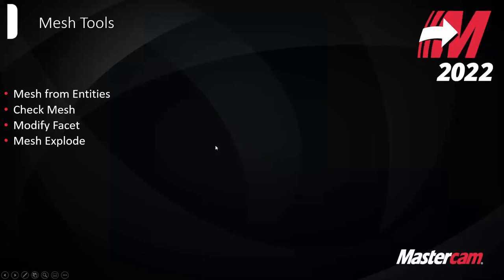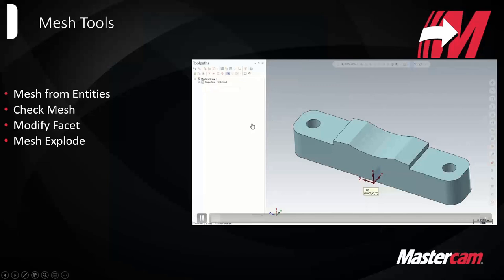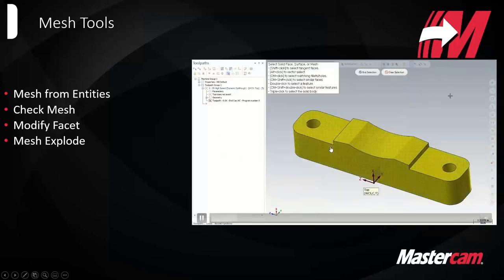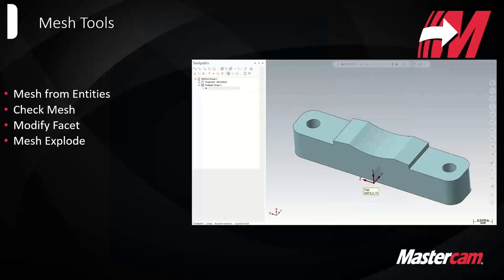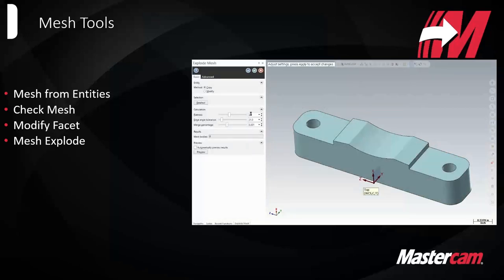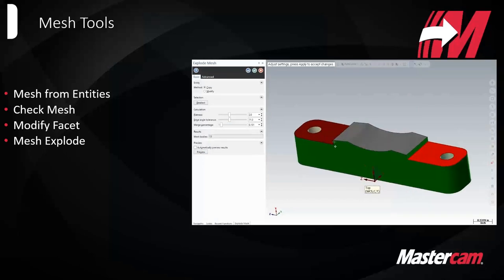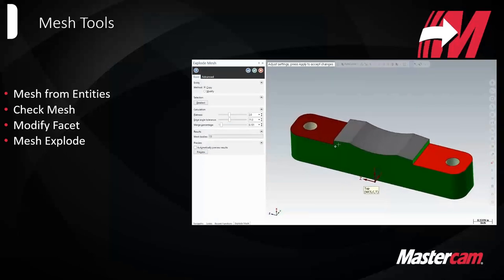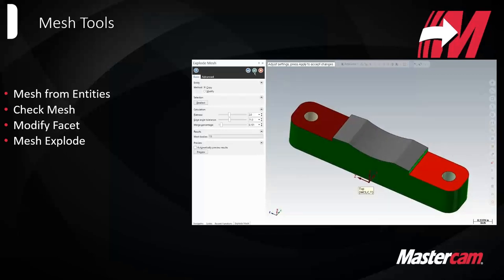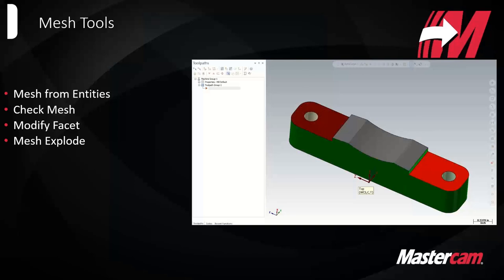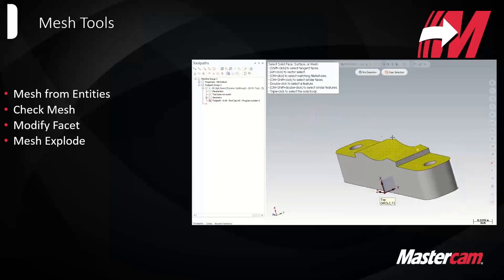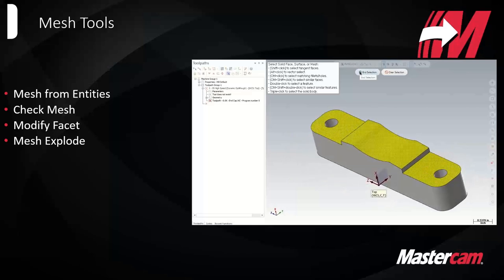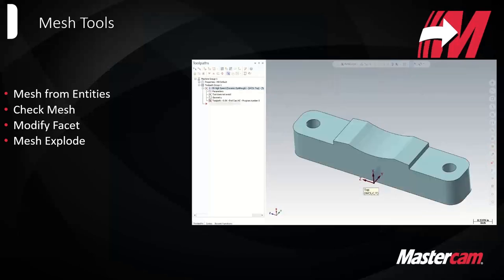Mesh Explode is probably the most handy tool out of these mesh features. A mesh is considered a single entity, making it hard to pick individual faces for machining. The Explode function lets you modify the edge angle tolerance and merge percentage, previewing via colors how many different mesh entities it'll split into. For example, if I only want to machine the ears on the side first and then leave the center for later, I can achieve that more easily versus using containment boundaries or converting the mesh to solid or surfaces.